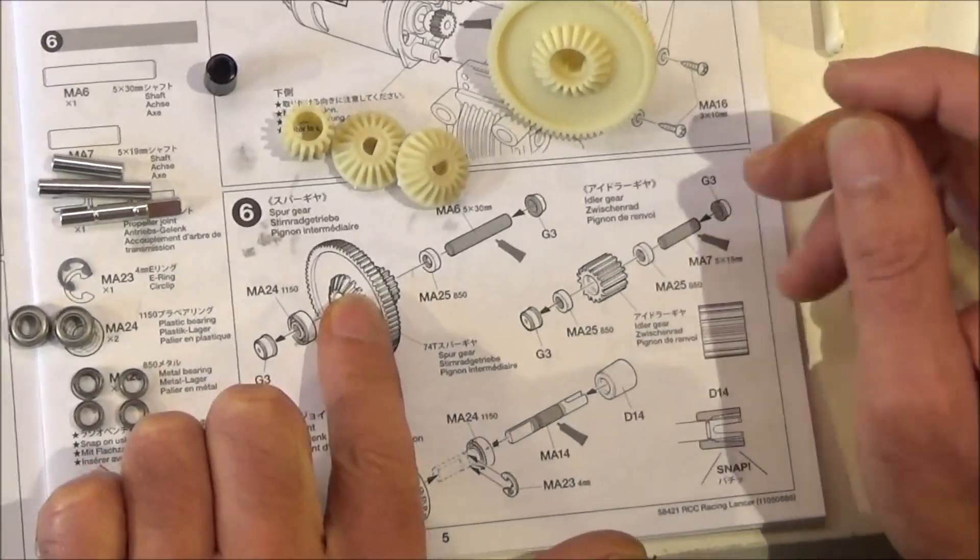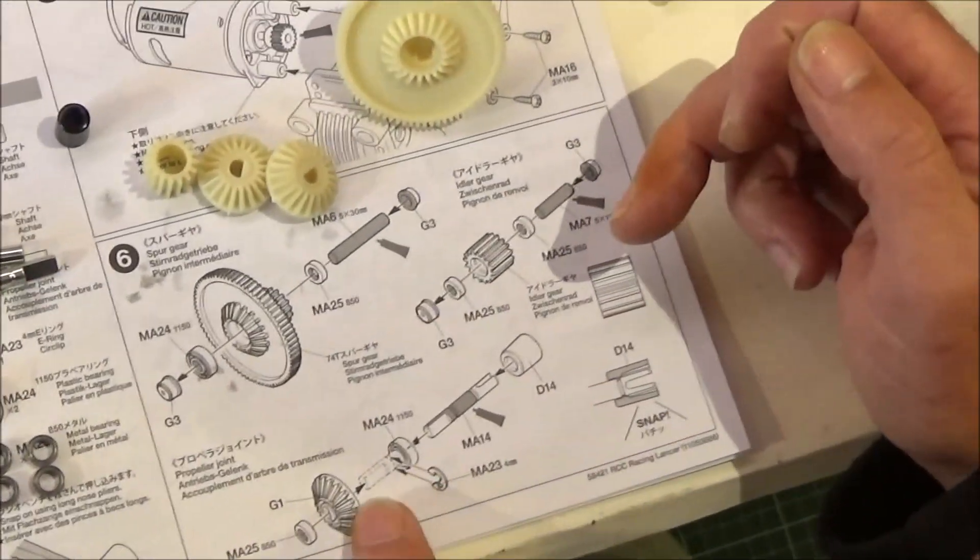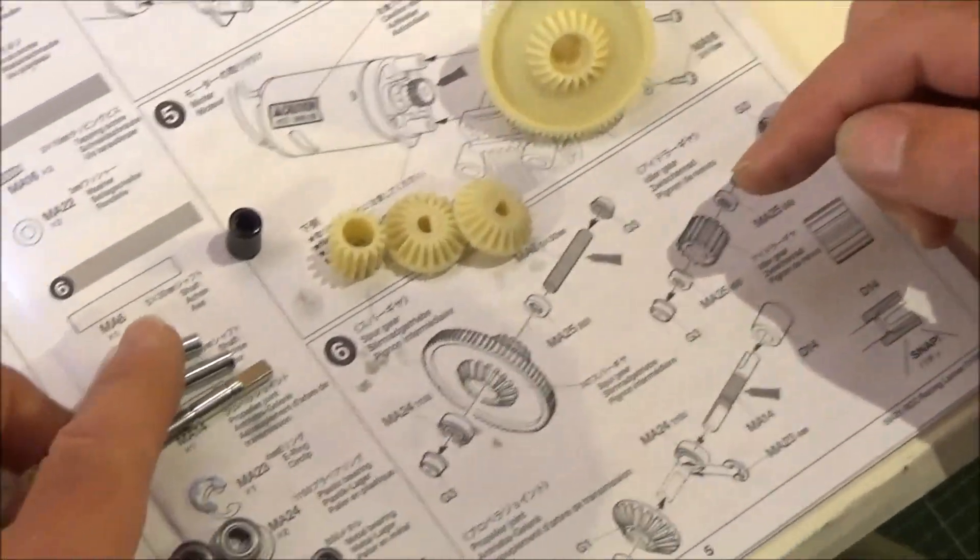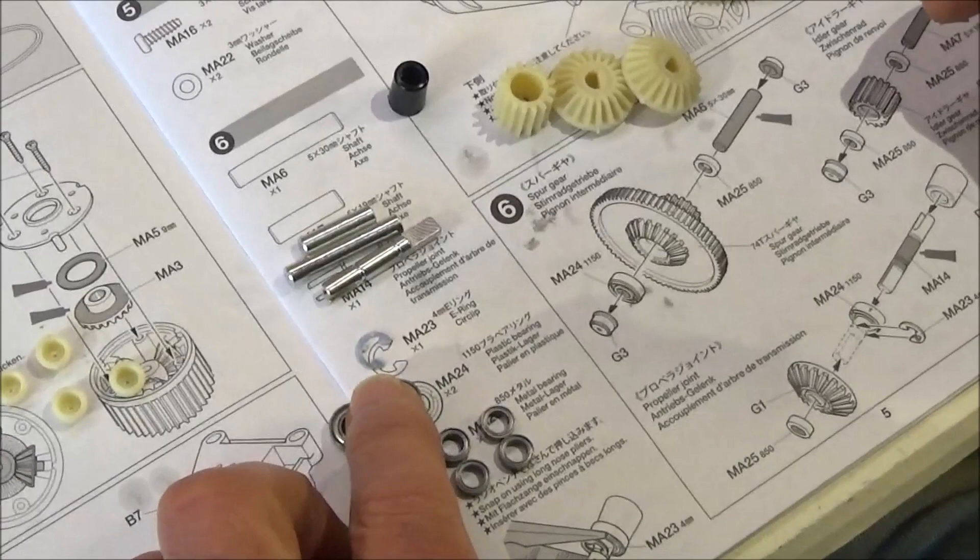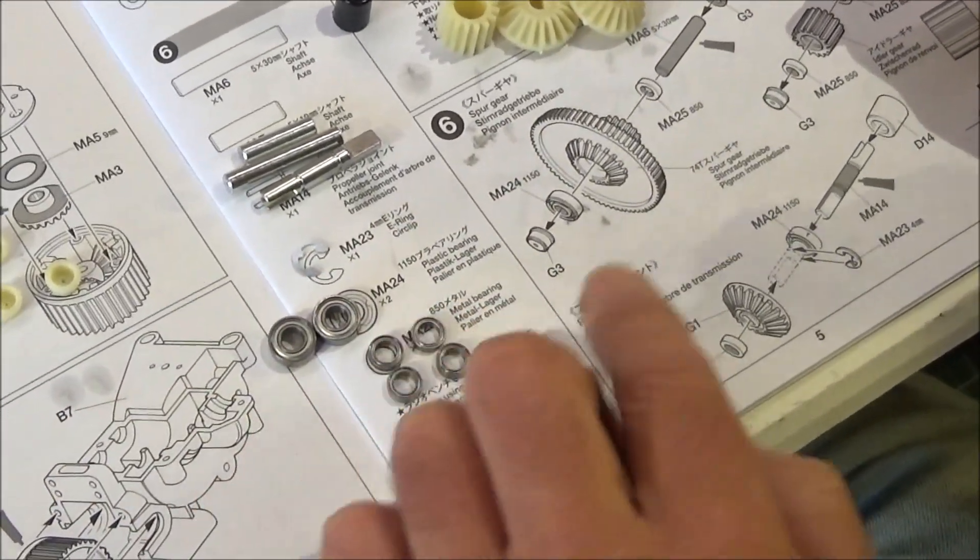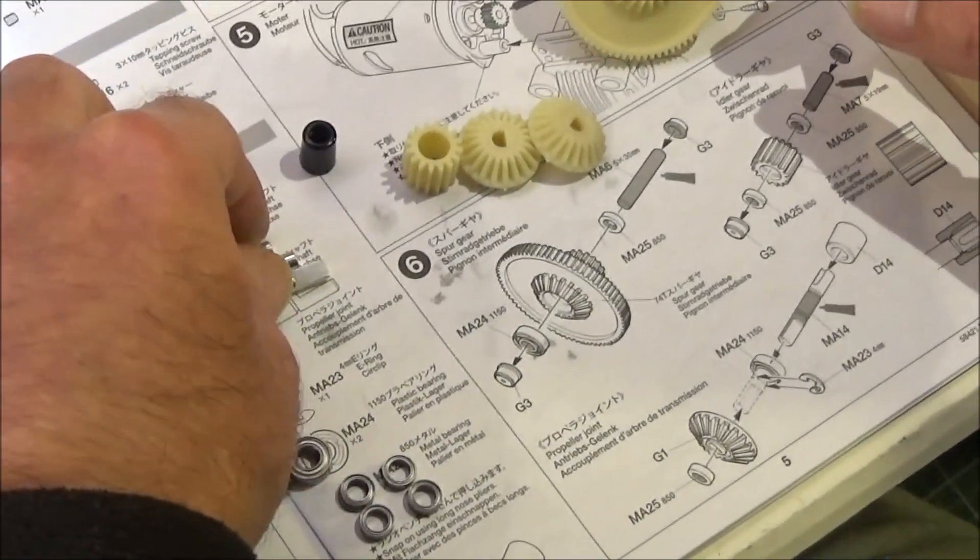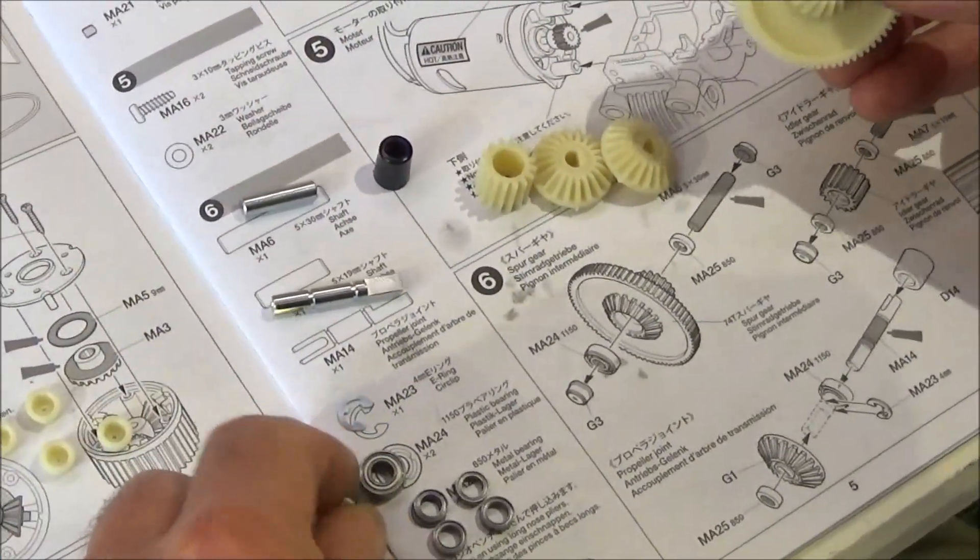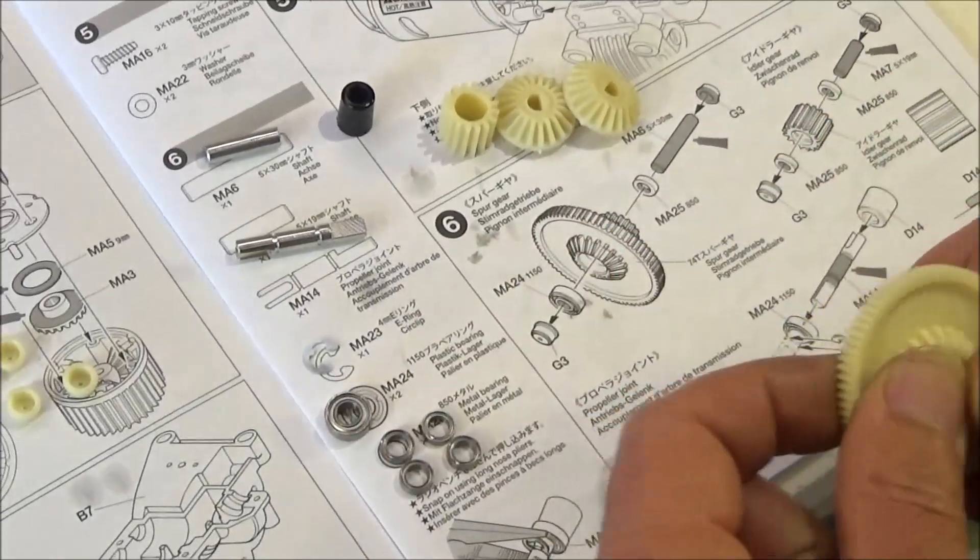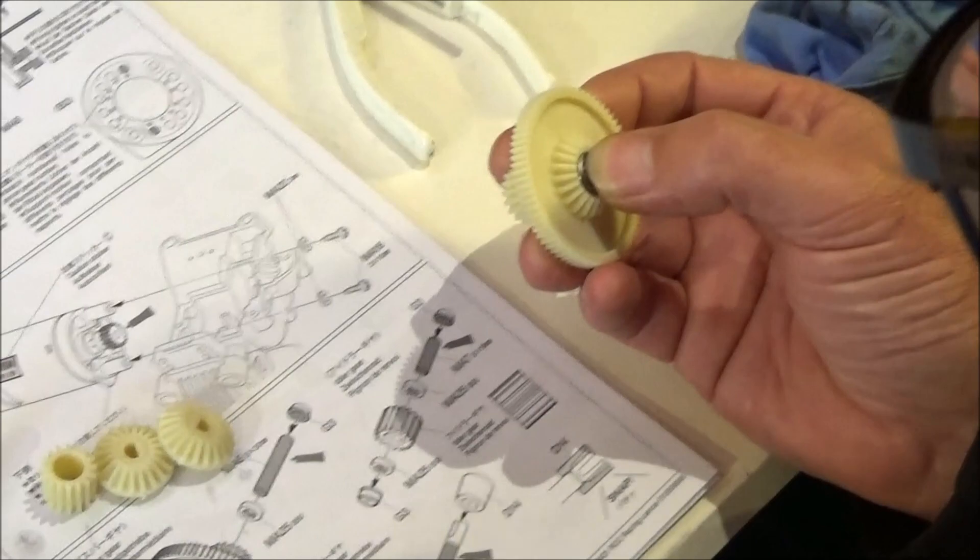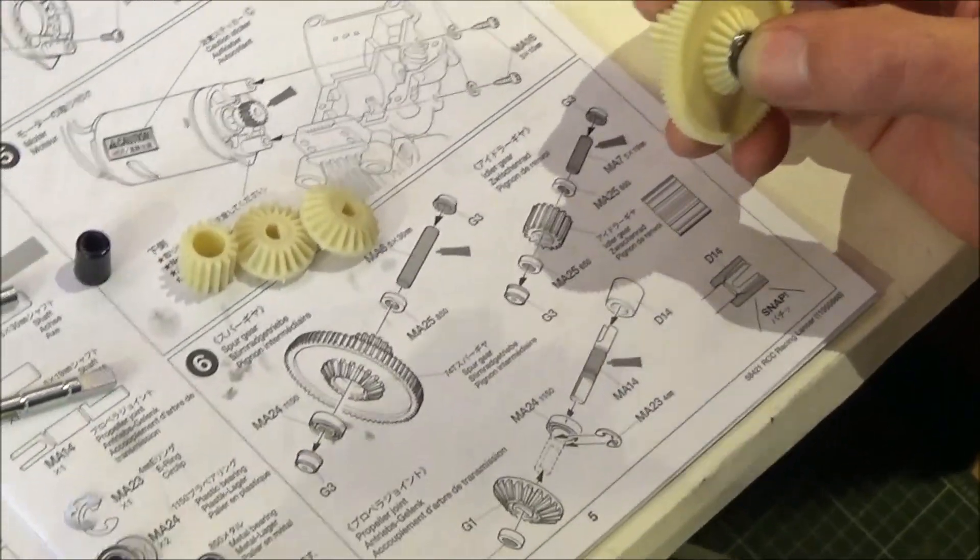Step six. We've got the spur gear, the idler gear and the prop joint. We're going to just put those onto the respective axles there. I've got my two 1150 metal bearings to replace the plastic ones and the 4850s. So it's just a matter basically of getting these, putting the bearings in. I don't need the grease because we've got the bearings and just putting it all together.